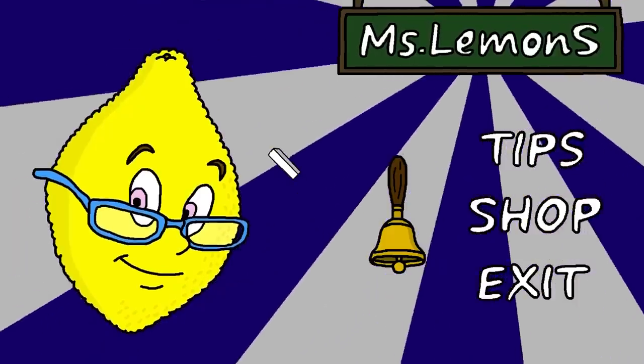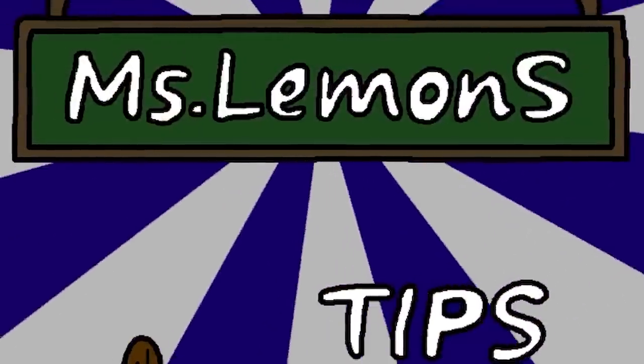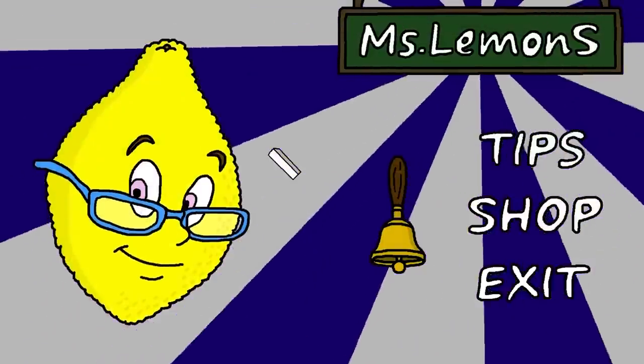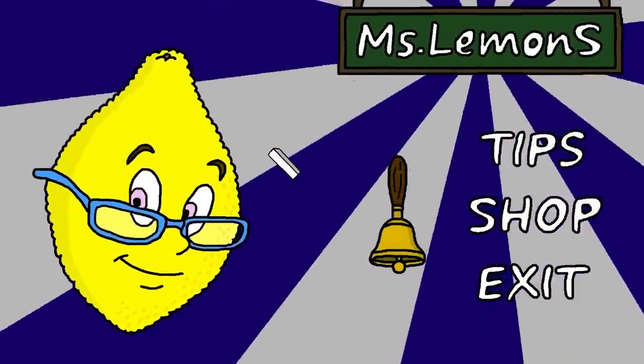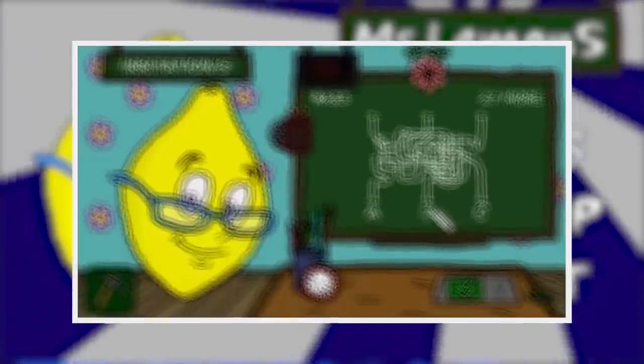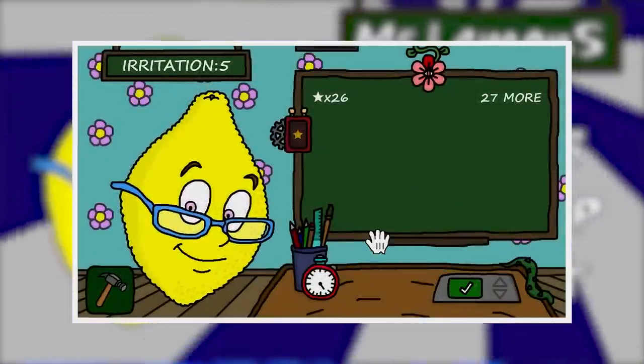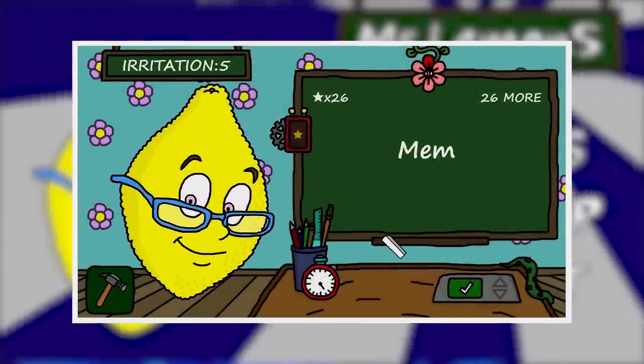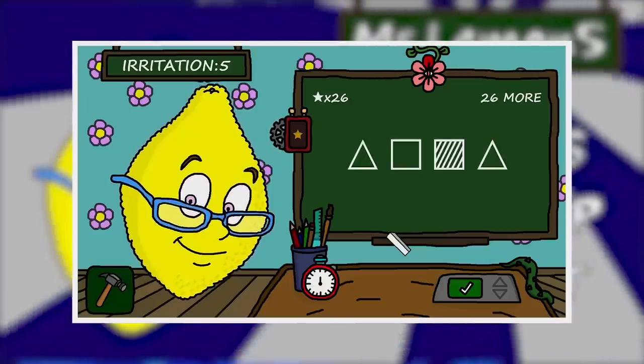Hey guys, SuperHorrorBroMike here and in today's video we are continuing our playthrough of Miss Lemons. Now in today's video what I want to do is try and get a different ending than we've previously achieved and I think this ending is going to have to be activated by actually completing the game which is really really hard because I have no idea how many classes we have to take in order to get to the end of the game.